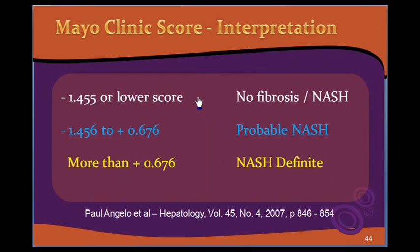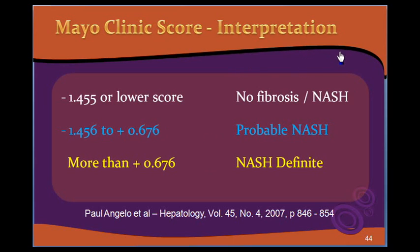After the calculation, if the score is minus 1.455 or less, there is no fibrosis or NASH in the liver. If the value is between minus 1.456 and plus 0.676, there is a high probability of NASH. If the score is more than plus 0.676, the diagnosis of NASH is definite. This score almost replaces liver biopsy to diagnose NASH, allowing certainty in the majority of cases depending on the score.